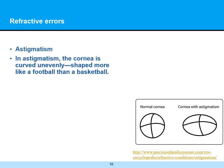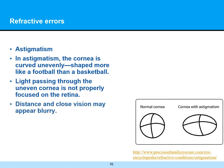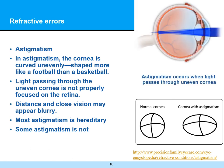Going away from myopia for a minute, finishing out the other refractive errors: astigmatism is when the cornea is curved unevenly, shaped more like a football than a basketball. Light passing through the uneven cornea is not properly focused on the retina, so distance and close vision may appear blurry. A good way to simulate that is to look at the back of a spoon. The shape of most people's cornea tends to be hereditary, though a certain amount could be the result of disease.